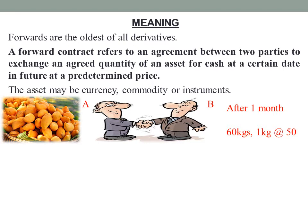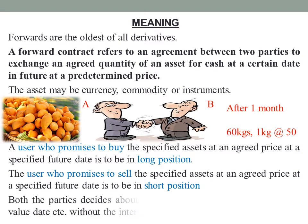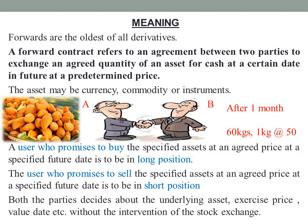A user who promises to buy the specified asset at an agreed price at a specified future date is said to be in a long position. And the user who promises to sell the specified asset at an agreed price at a specified future date is said to be in a short position.